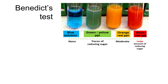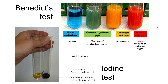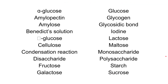The second test is the iodine test for starch. Iodine in potassium iodide solution is normally an orangey-brown color. If starch is present in your sample, it will turn blue-black. These are all the key terms for this topic.